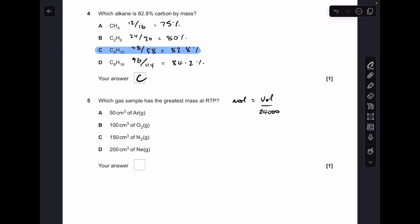Number five: first thing I'm going to do is calculate the moles of each gas. That's the volume, and because they're all in centimeters cubed I'm dividing by 24,000. Once I've got the moles, I'm just going to multiply by the MR and that'll give us the mass. So this first number here, these are all the moles, multiplying that by the MR, so you can see that the heaviest one is C.